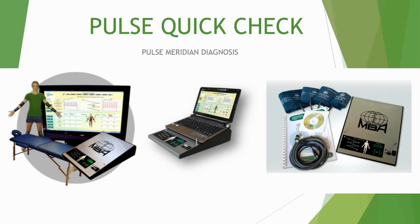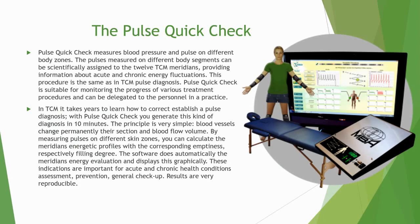First, let's understand how the Pulse Quick Check actually works. It's very simple: the Pulse Quick Check measures blood pressure and pulses on different body zones. The pulse is measured on different body segments, which can then be scientifically assigned to the 12 TCM meridians, thereby providing information about acute as well as chronic energy fluctuations. This procedure is also used in classic TCM pulse diagnosis.